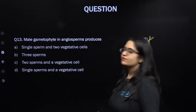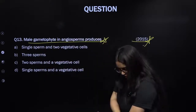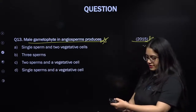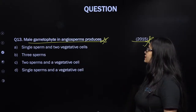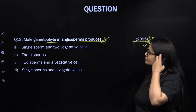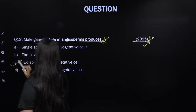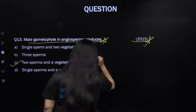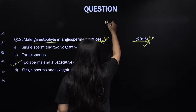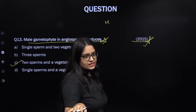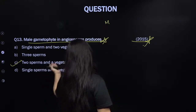From NEET 2015: male gametophyte in angiosperms produces two sperms and one vegetative cell. Let me explain how. Starting from a microspore — which is haploid — mitosis occurs, but it is unequal, producing two cells of unequal size: a larger vegetative cell and a smaller generative cell that floats in the cytoplasm of the vegetative cell.